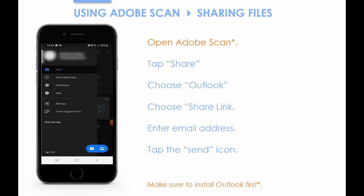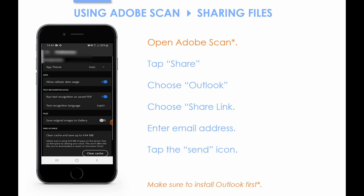First, go into the menu and choose Preferences. Then find where it says 'Run text recognition on saved PDFs' and uncheck that option. That way, it won't do it and you'll be able to send your PDF straight away.